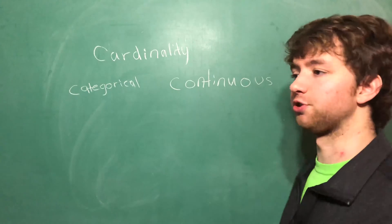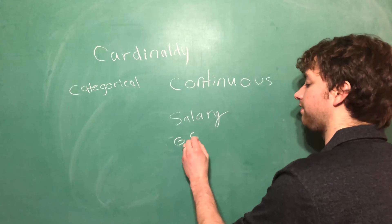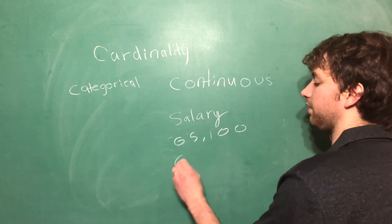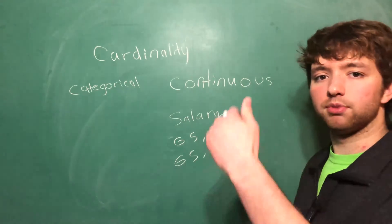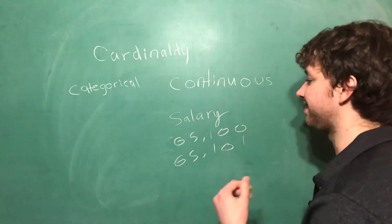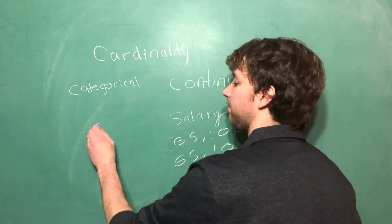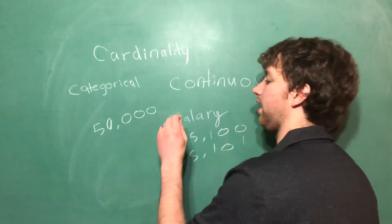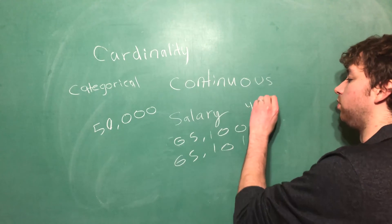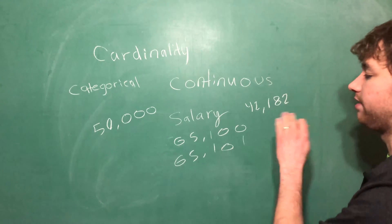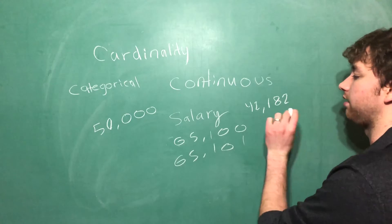An example of a continuous feature may be something like salary. For salary someone might earn $65,100. Another person might earn $65,101. And it gets to the point where the number of instances or rows is very similar to the cardinality of salary. So for example we might have 50,000 rows and for everyone's earnings from last year there might be 42,182 different values in that data set. So you can see that the number of different values is extremely high.